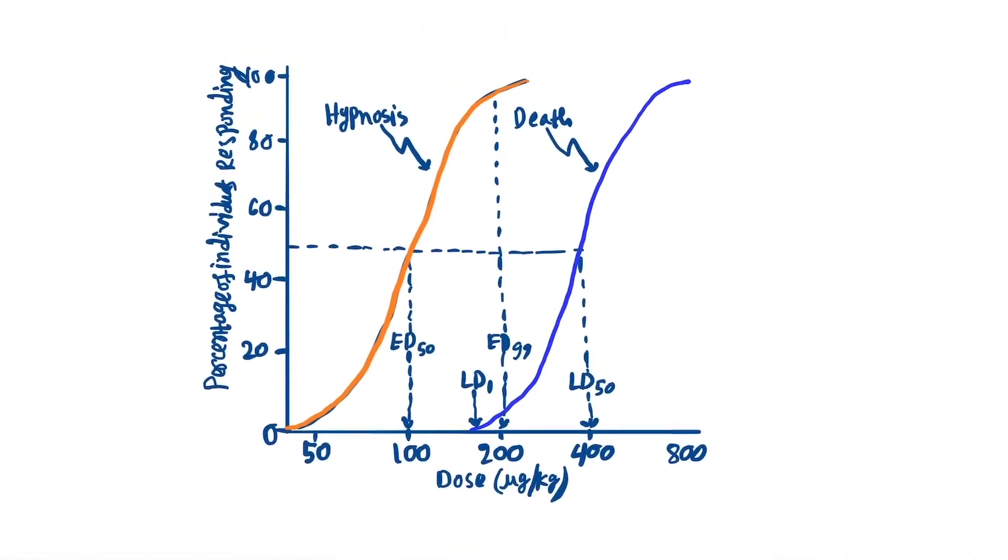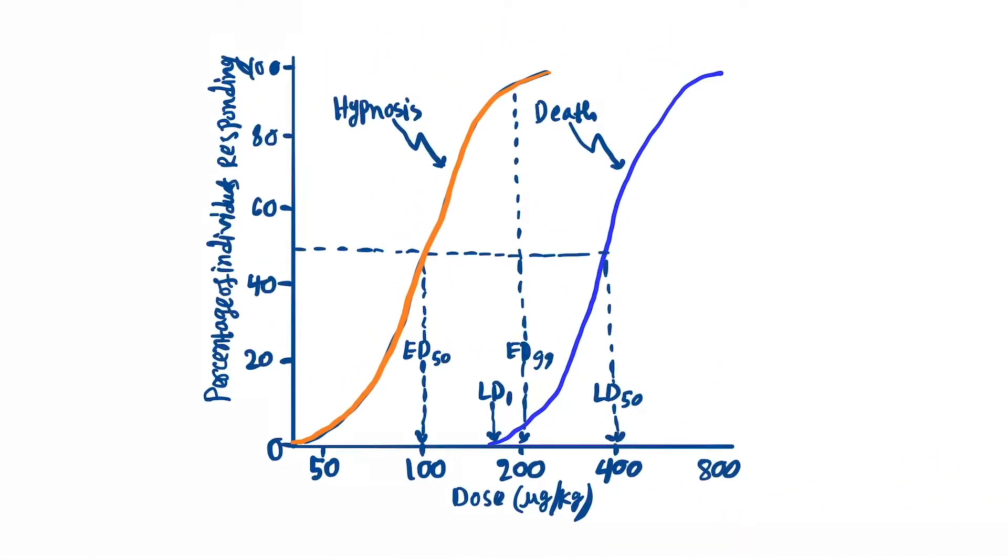Now see the curve graph to determine the therapeutic index. This is the curve of a sedative drug, like benzodiazepine.